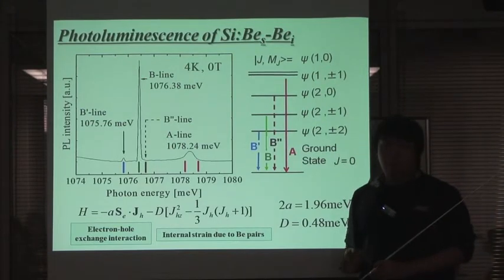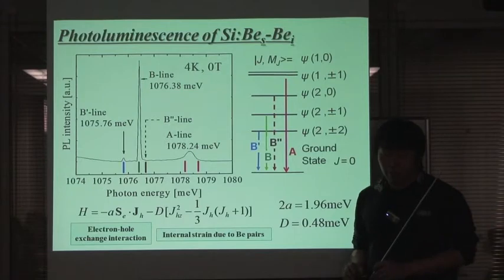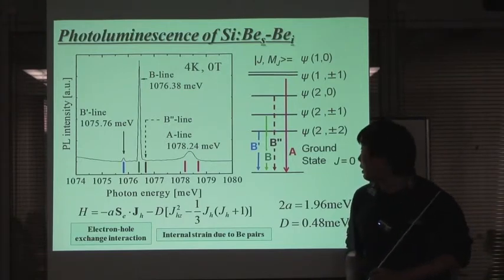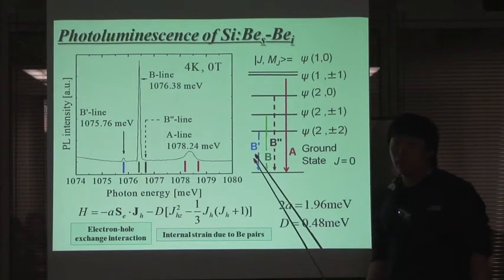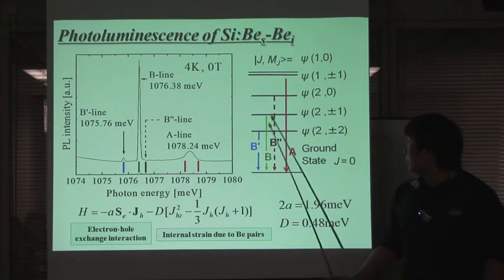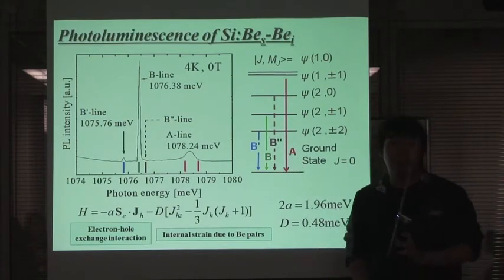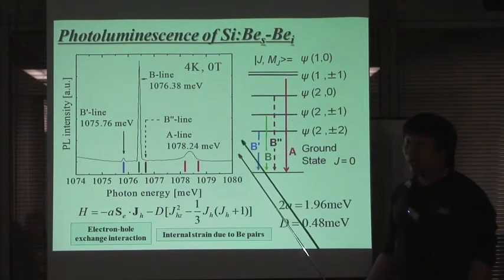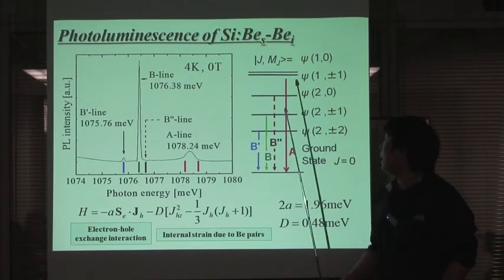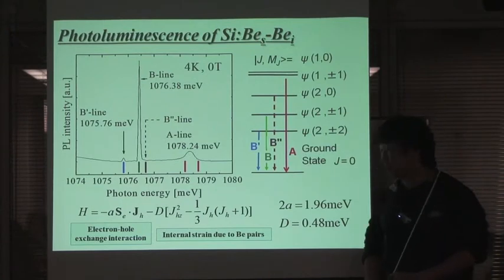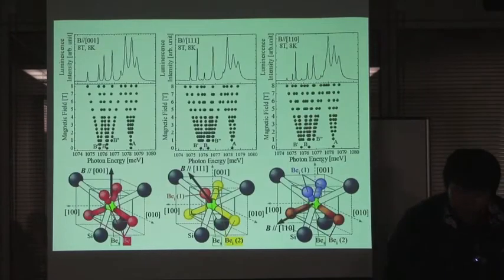If the magnetic field is applied equivalently to all of the barium pair configurations in silicon, B' is divided into two peaks because of the two degenerate states, and B' is also separated into two peaks. B'' has no splitting under the magnetic field, and the A' line has three splittings under the magnetic field.